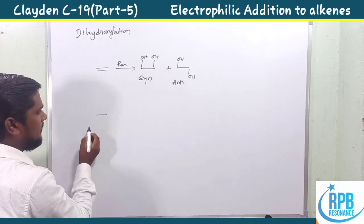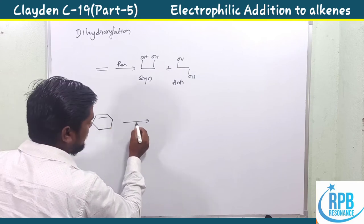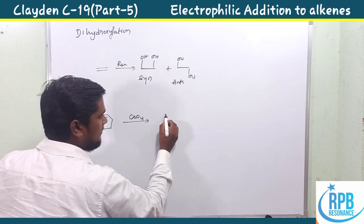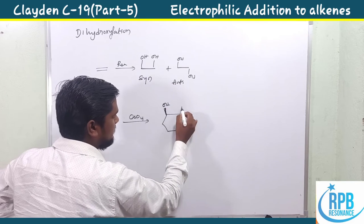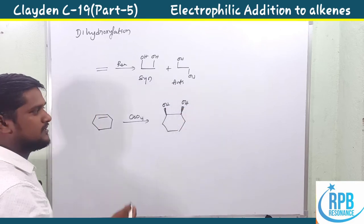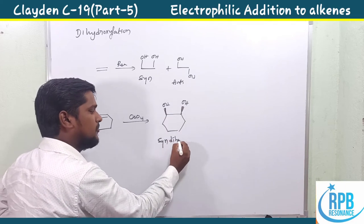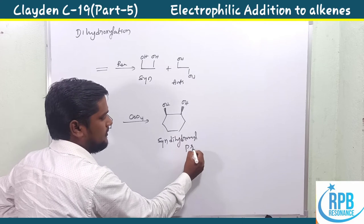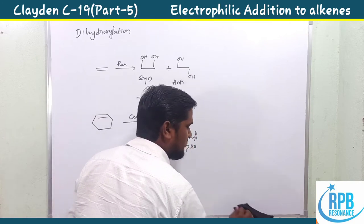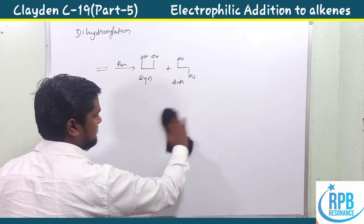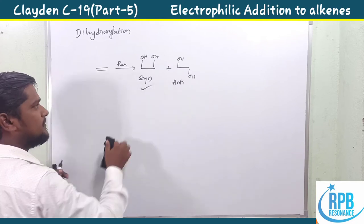For a simple molecule like cyclohexane treated with osmium tetroxide, we get syn diols — the syn dihydroxylation product, where both hydroxyl groups are in the same plane. Osmium tetroxide always gives syn addition only, as explained by the mechanism.